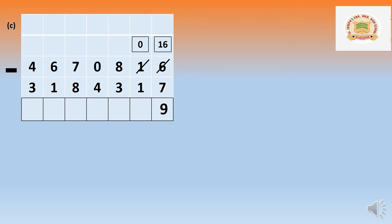After giving, the tens become 0. Zero tens cannot minus 1, so we borrow from hundreds. The 8 hundred becomes 7 hundred, giving 100 to tens. That becomes 10 tens. Removing one zero, we have 10. Ten minus one equals nine.